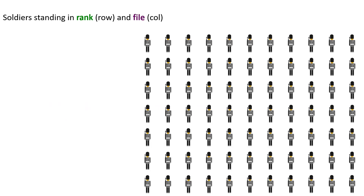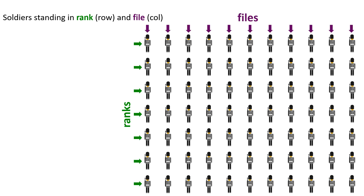Soldiers are standing in rank and file — the ranks are the rows and the files are the columns. Therefore, the height of each soldier is a function of rank and file, analogous to f of x and y.